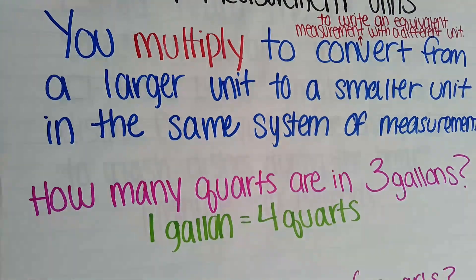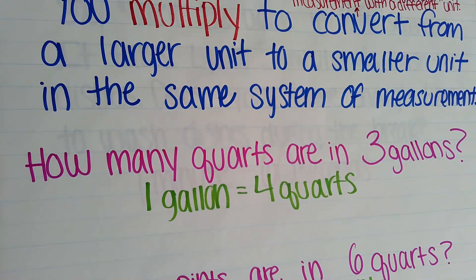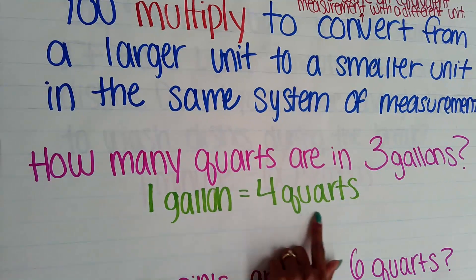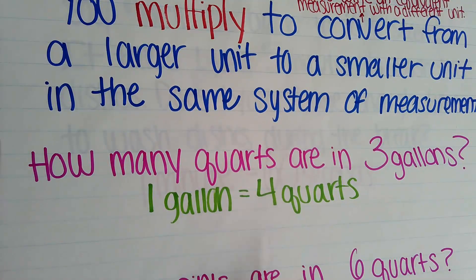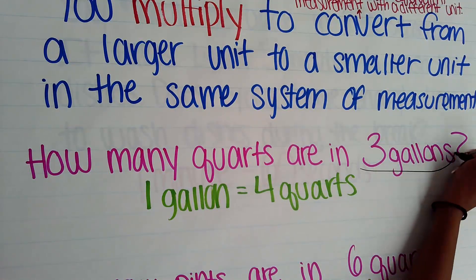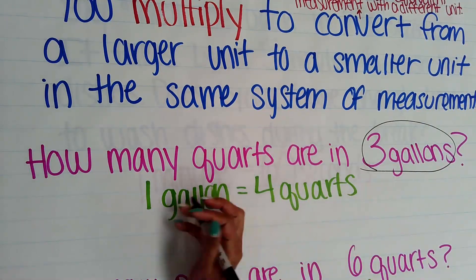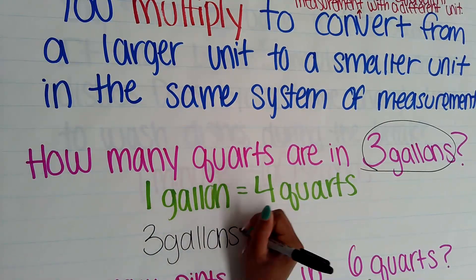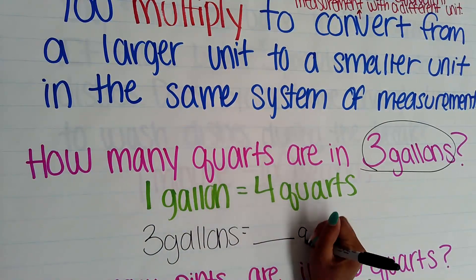If we have 'how many quarts are in three gallons,' students are always given the initial conversion. So I have 1 gallon equals 4 quarts. In my word problem, I have my 3 gallons. So 3 gallons gives me how many quarts?